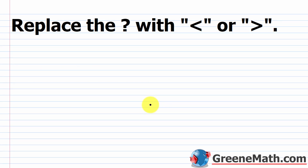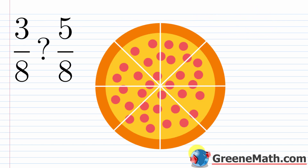This is one way to do it — it's the slower way, but we're going to use it to build up the concept. As we get further along in the lesson, I'll give you the shortcut which basically involves just cross-multiplying. We want to replace the question mark with either the less than symbol or the greater than symbol, starting with three eighths and five eighths.